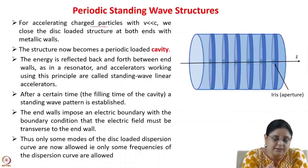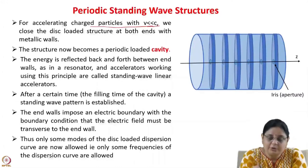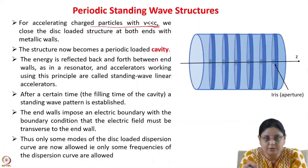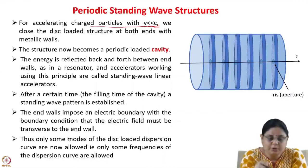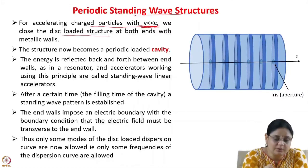For accelerating charged particles with velocity much less than the velocity of light, if you use a traveling wave structure, you will have to reduce the phase velocity to a very small value, meaning the value of n will be very large. So you can use what is known as periodic standing wave structures. For accelerating charged particles with V much less than C, we close the disc-loaded structure at both ends with metallic walls.